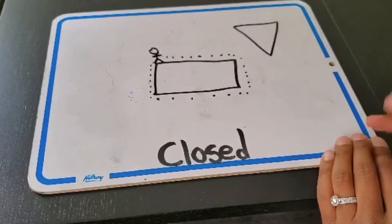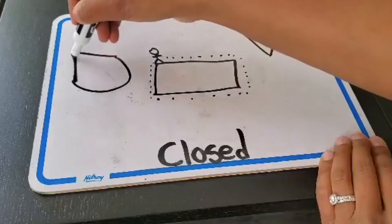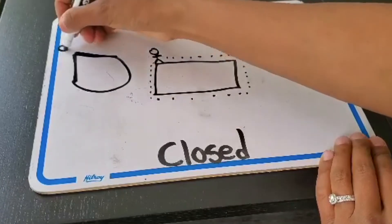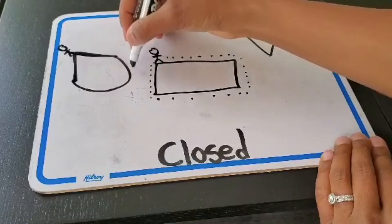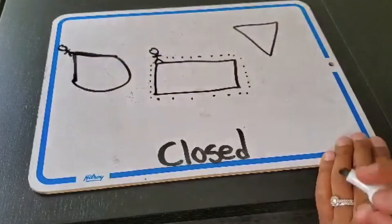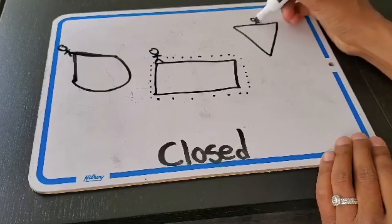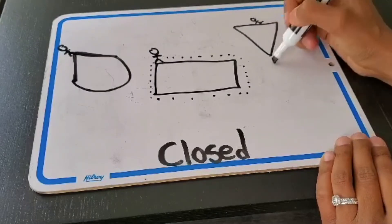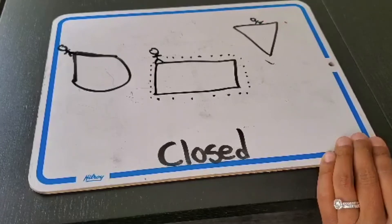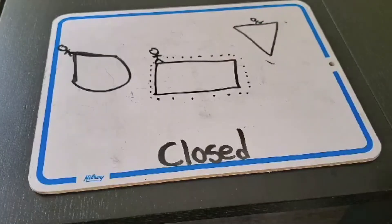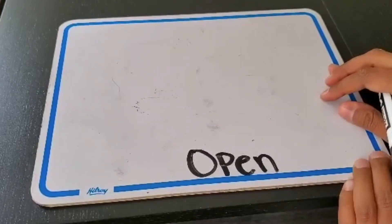So this is a closed line, and this is a closed line. If you're at any point on these shapes, you can go all the way around and get back to where you started without turning around. These are all closed lines.